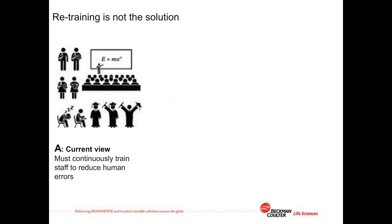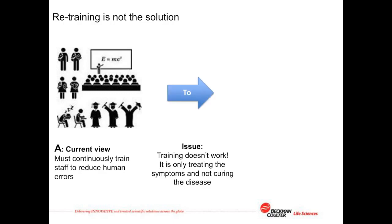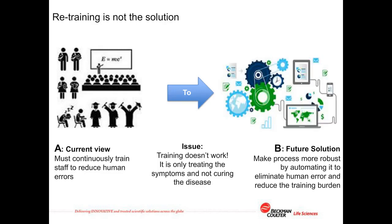This is very much on the FDA's mind. Another common theme is that the FDA is saying retraining is not the solution. Saying the reason we have a problem is because staff need retraining is generally not acceptable to the FDA. They're saying that by retraining, all you're trying to do is treat symptoms and not cure the disease — it only works for a short period until human error starts to creep in again. What they're really suggesting is the correct way forward is to make the process more robust. If we can automate it to eliminate those human error steps, that will make it more reliable and robust, and reduce the training burden in the industry as well.